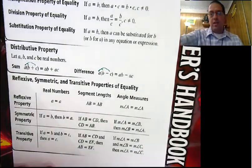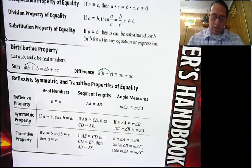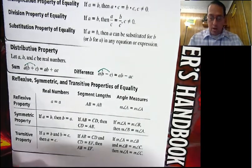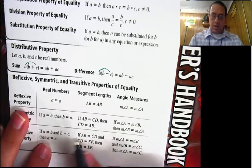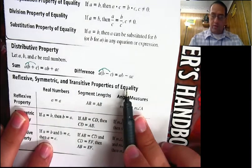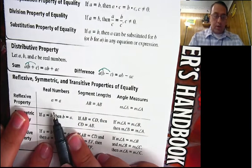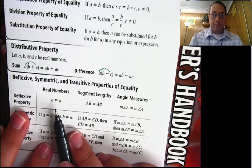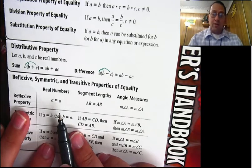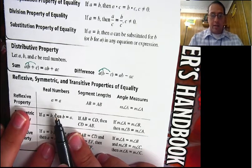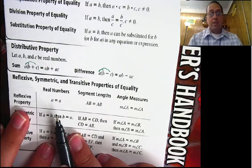These next three are kind of, sort of new — sort of self-explanatory and not a real big deal. Reflexive property of equality: a equals a. That is super simplistic, and you might wonder why they even need a property that says a number equals itself, but apparently they do. 5 equals 5, 4 equals 4. Segment lengths: the length of segment AB is the length of segment AB. The measure of angle a equals the measure of angle a.